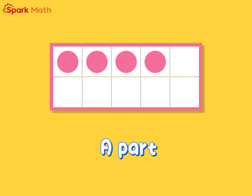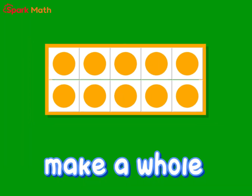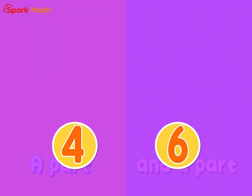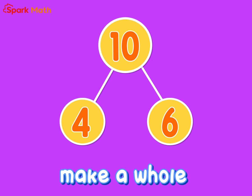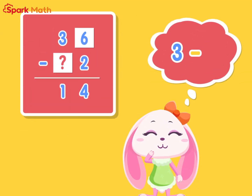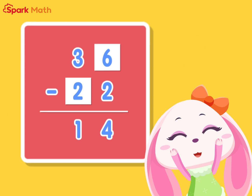One and nine can make a turn, because I can. A part and a part make a whole. When I subtract one part from the whole, I get another part.